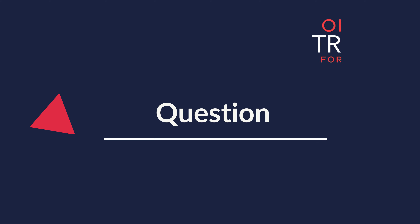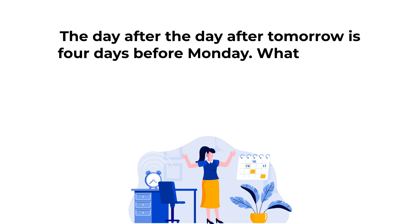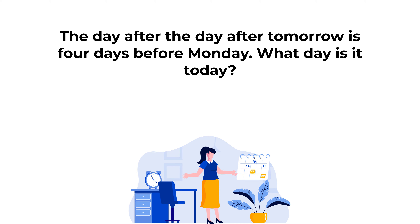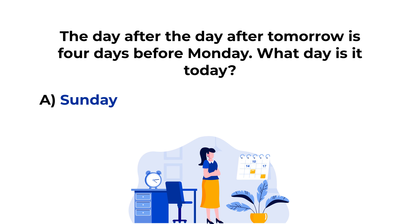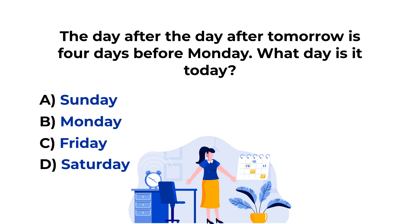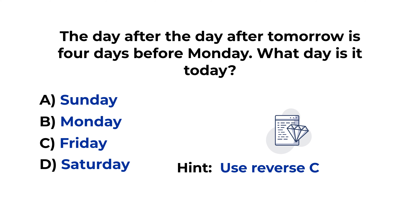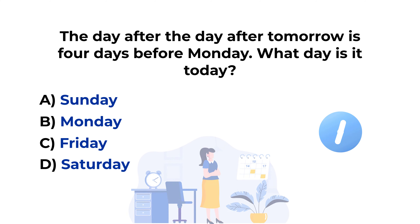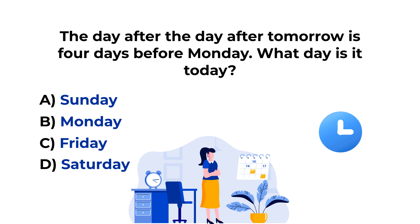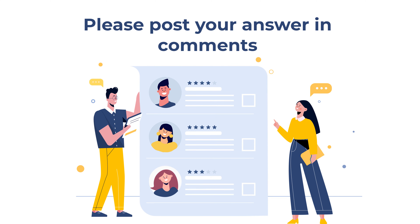Here's a practice problem: 'The day after the day after tomorrow is four days before Monday. What day is it today?' Choices: A is Sunday, B is Monday, C is Friday, D is Saturday. Hint: the best way to solve these types of problems is using reverse calculations. Post your answer and rationale in the comment section.